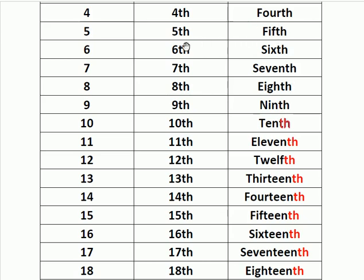Here, fifth: the number name is f-i-f-t-h, fifth. Then comes ninth: the ordinal number name is n-i-n-t-h. There is no 'e' here — it is n-i-n-t-h, ninth. Then comes twelfth: it is t-w-e-l-f-t-h. Don't make the mistake of writing t-w-e-l-v-e-t-h — it is 'f' here. Twelfth.